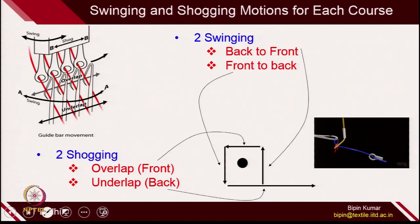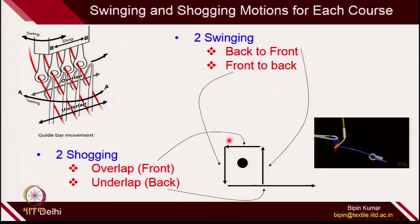In the previous week, I gave more emphasis on swinging and shogging motion. For each course development in a warp knit structure, there are 2 swinging motions and 2 shogging motions. Whenever the guide bar provides yarn to a needle, it first does the swinging motion, then it does the shogging motion on the front side of the needle — which is called overlap — then swings again from front to back, and then does the underlap at the back side of the needle. Once it completes these 4 individual motions, it goes for development of the next course.